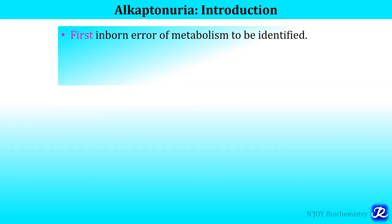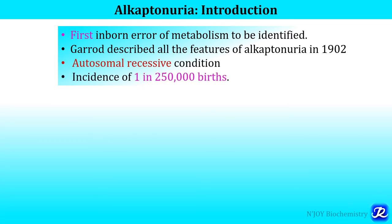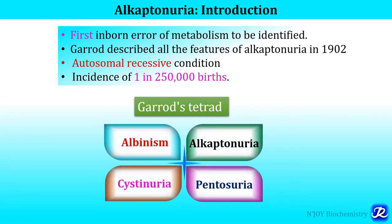This is the first inborn error of metabolism to be identified. British physician Garrod introduced the phrase 'inborn error of metabolism' in 1908 and was the first to describe all features of alkaptonuria in 1902. Alkaptonuria is an autosomal recessive condition with an incidence of 1 in 250,000 births. It is one of Garrod's tetrad — four inherited metabolic diseases: albinism, alkaptonuria, pentosuria, and cystinuria.